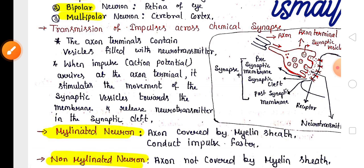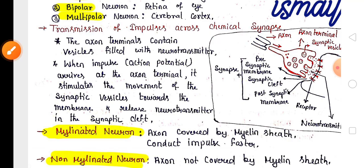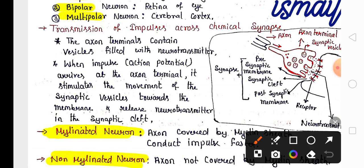Here is the transmission of impulses across the chemical synapse. The axon terminal contains synaptic vesicles that secrete neurotransmitters between the gap called synapse. You can find pre-synaptic and post-synaptic membranes. During impulse transmission or action potential, synaptic vesicles release neurotransmitters in the synapse, which helps in the transmission of nerve impulses.